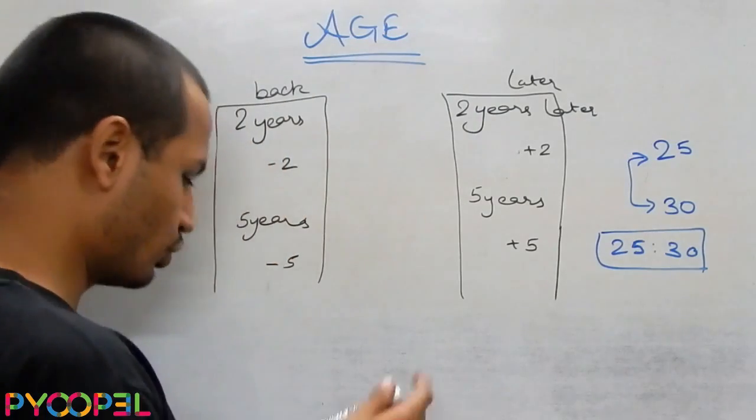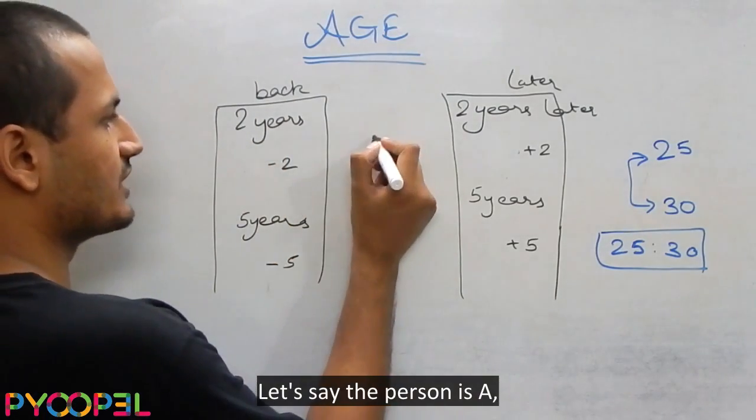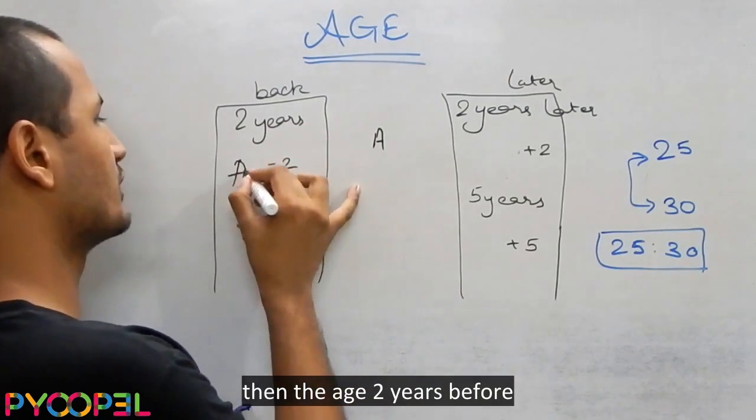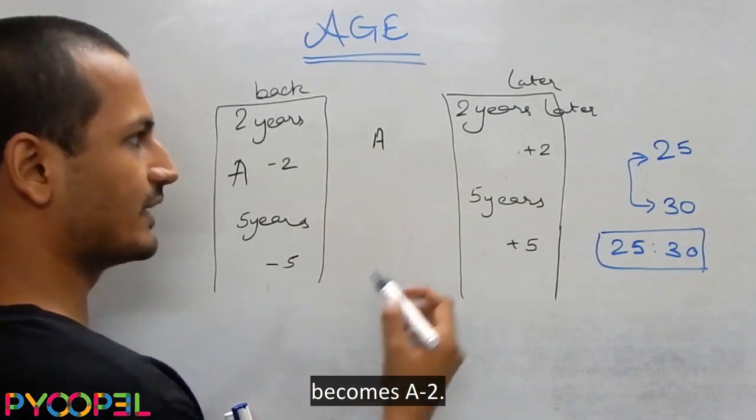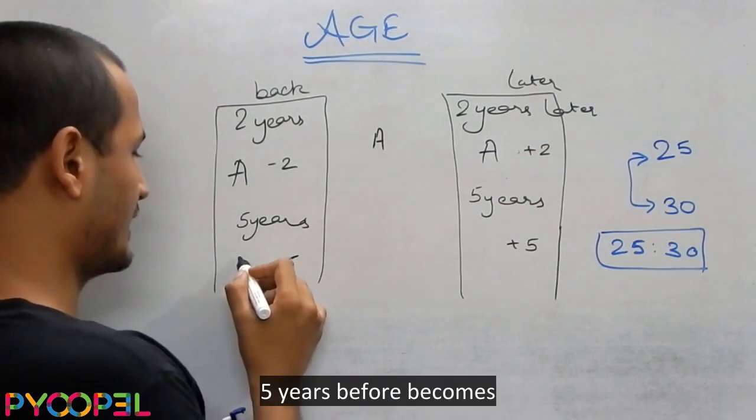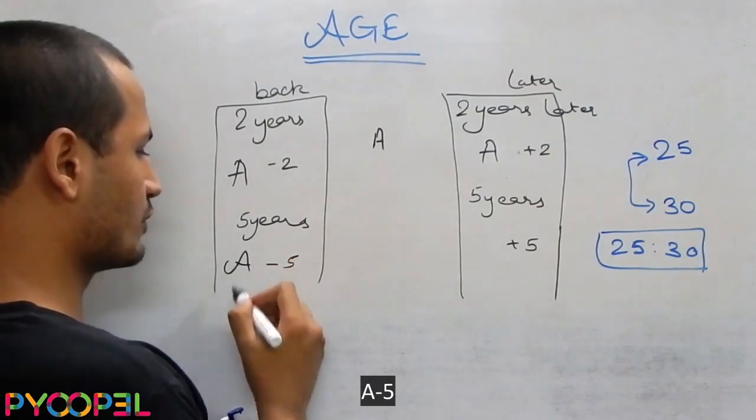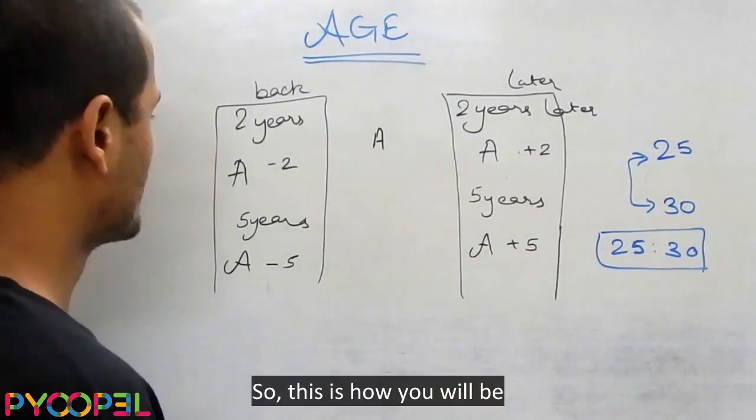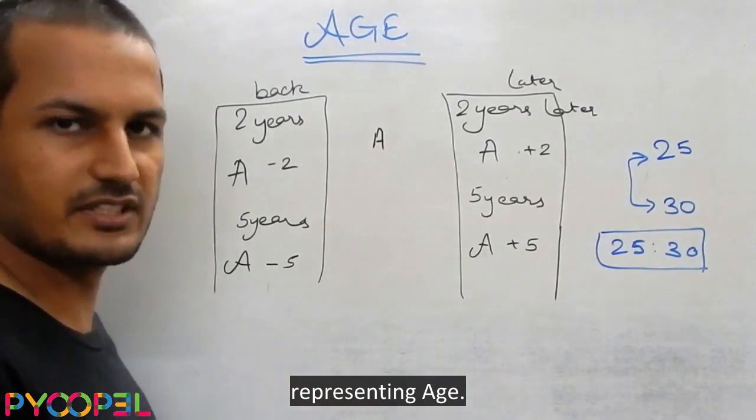If we denote the age of a person, let's say the person is A, if you denote this age by A, then the age two years before becomes A minus 2, age two years later becomes A plus 2, five years before becomes A minus 5, five years later becomes A plus 5. So this is how we will be representing age.